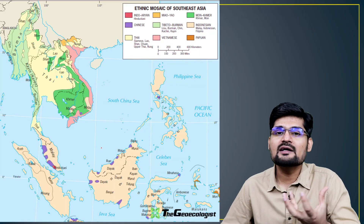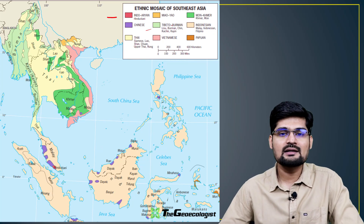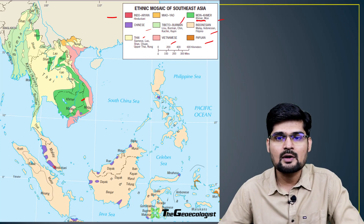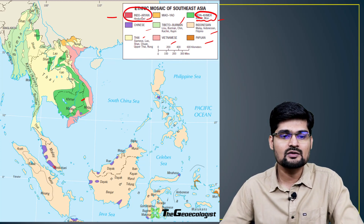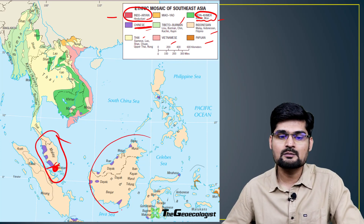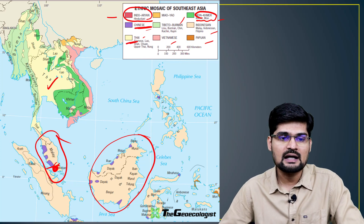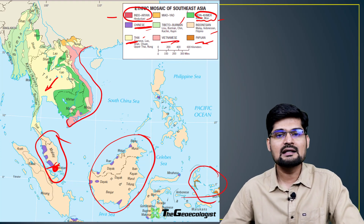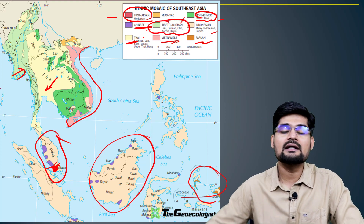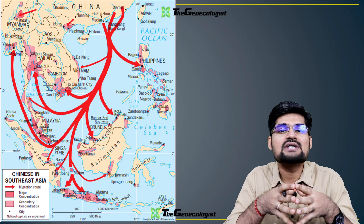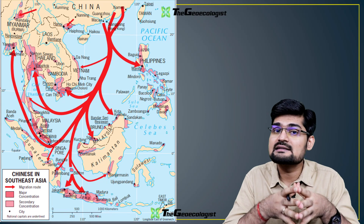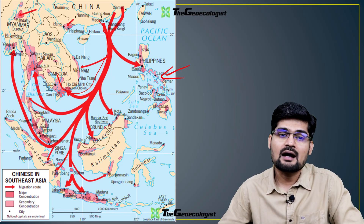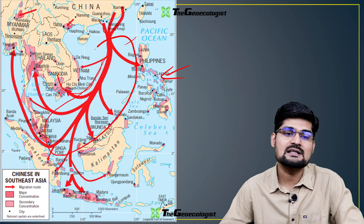The ethnic mosaic of Southeast Asia consists of Indo-Aryan, Chinese and Thai populations, then Indonesian, Papuan, Vietnamese, Tibetan, Burman and Mon-Khmer groups. The deep green color represents Mon-Khmer, Indo-Aryan or Hindustani groups are found in Singapore, Chinese are in Malaysia and some portions of Indonesia, the Thai population covers all of Thailand and nearby areas, Papuans are in the island chain near the Pacific, Vietnamese from north to south Vietnam, and Tibeto-Burman populations are in the Burma region. The transgression of Chinese has recently increased in the last few decades in this region, with large-scale influx of Chinese people also correlating with China's control over the South China Sea.